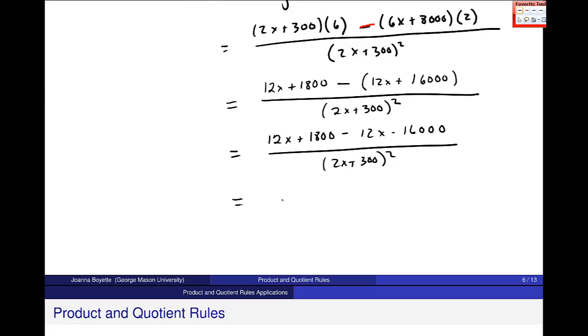So the 12x's cancel out, but I have 1,800 minus 16,000. So I get negative 14,200 over 2x plus 300, and that's still squared.